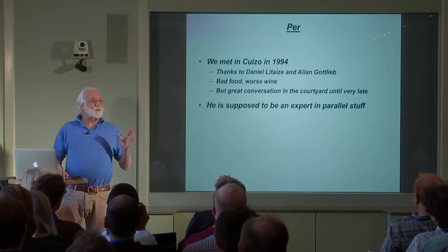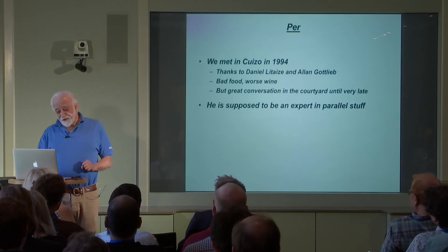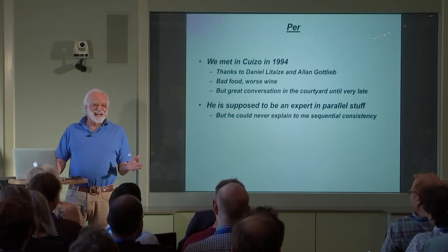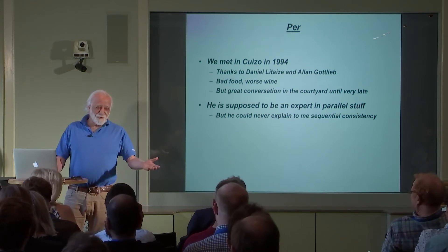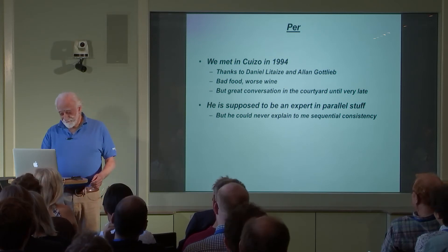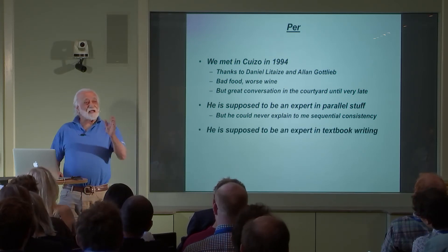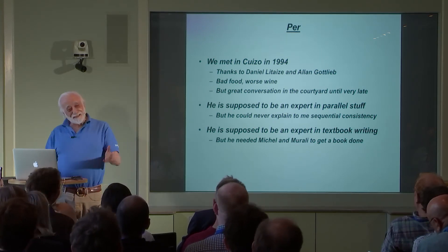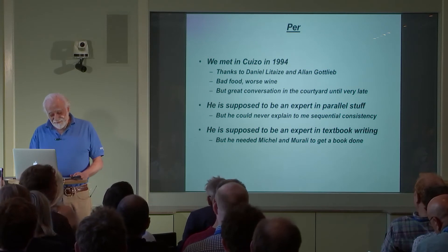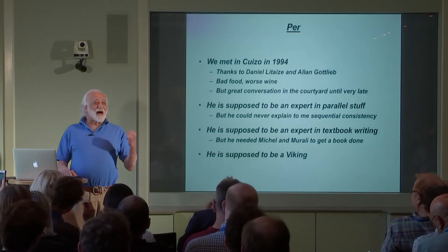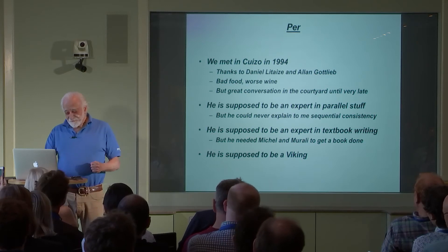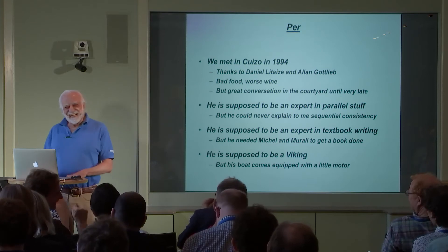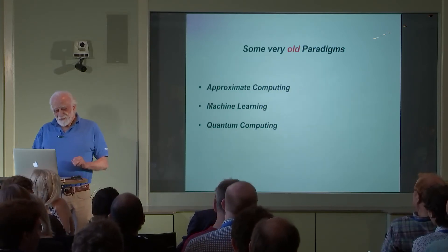Great conversation in the courtyard until very late, though. Now, Pear is supposed to be an expert in parallel stuff — but he could never explain this to me sequentially. He's supposed to be an expert in textbook writing — but he needed Michelle and Morley to get the book done. And finally, he's supposed to be a Viking — but his boat comes equipped with a little motor in the back.